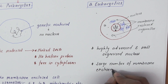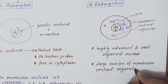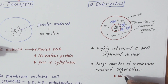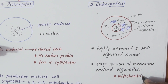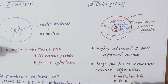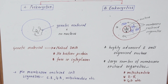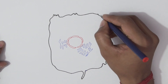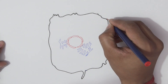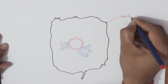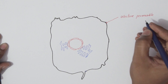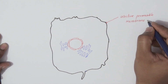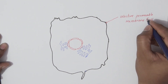Eukaryotic cells also have a large number of distinctive membrane-enclosed organelles like mitochondria, endoplasmic reticulum, and Golgi apparatus. Now we will discuss the structure of a cell. Basically, we are seeing a diagrammatic representation of a eukaryotic cell. The cell is enclosed or delimited by a selectively permeable membrane.